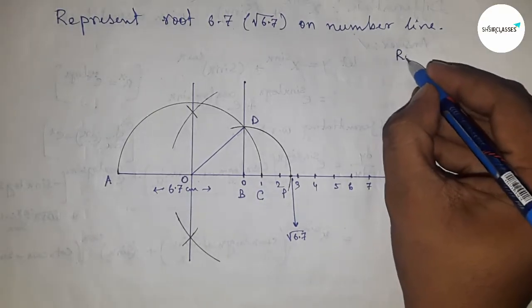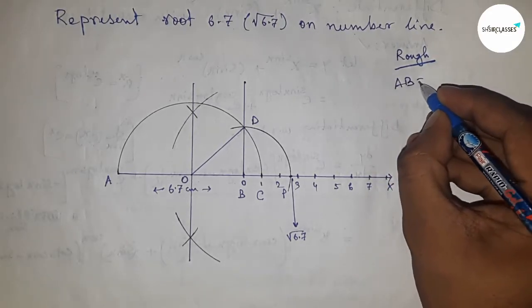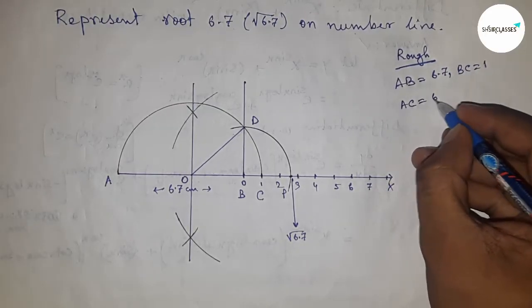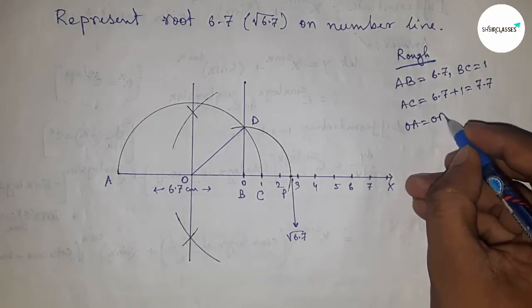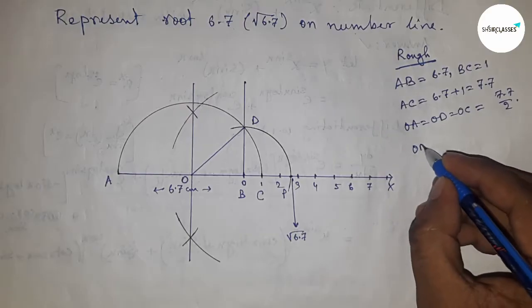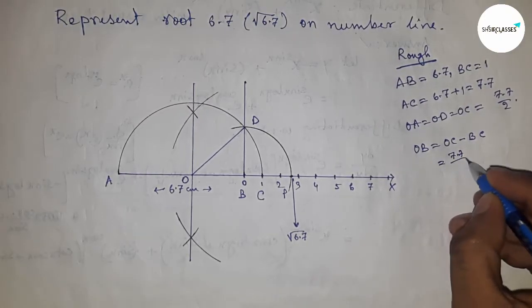Now let's discuss the calculation. AB equals 6.7 and BC equals 1 centimeter, so AC equals 6.7 plus 1, which is 7.7. The radius OC will be 7.7 by 2. OB equals OC minus BC, so calculating this gives 5.7 by 2.